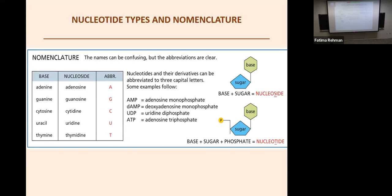You should know the difference between a base, a nucleoside, and a nucleotide. A base is just the purine or pyrimidine itself — adenine, guanine, cytosine, uracil, or thymine. A nucleoside is the base combined with its appropriate sugar (ribose or deoxyribose). A nucleotide is the base combined with both the sugar and a phosphate. For example, adenosine monophosphate has adenine with a sugar and one phosphate; deoxyadenosine monophosphate specifies that the sugar is deoxyribose.